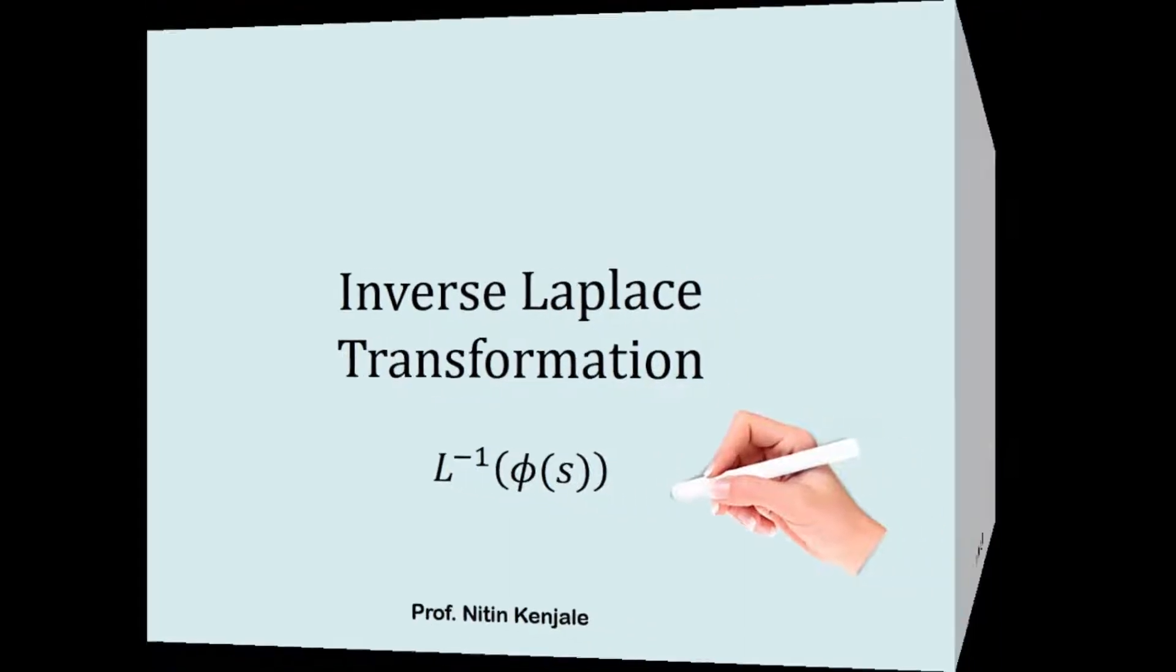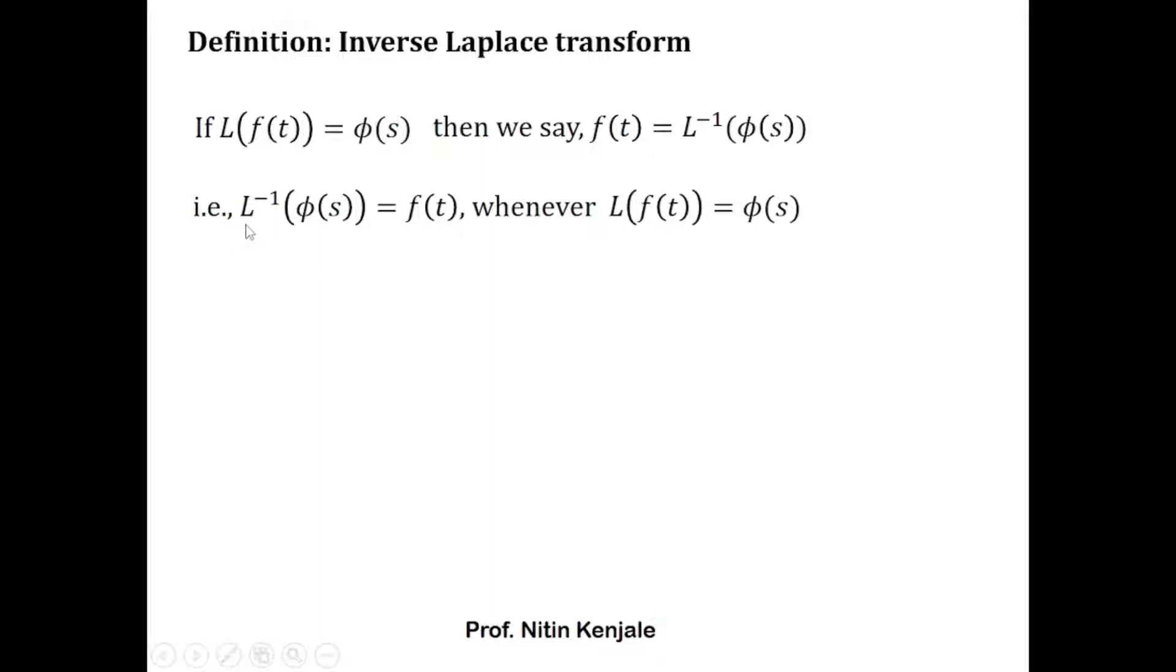Inverse Laplace transform states that if L{f(t)} = φ(s), then we say f(t) = L⁻¹{φ(s)}. That is, whenever you are asked to find inverse Laplace of φ(s), we search for f(t) whose Laplace is φ(s). So L⁻¹{φ(s)} = f(t) whenever L{f(t)} = φ(s).